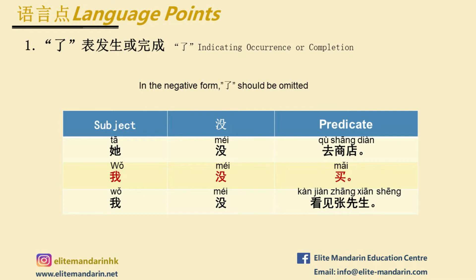The negative form of 了 in the cases above is 没 plus verb plus the object. In the negative form, 了 should be omitted. For example: 他没去商店 — she didn't go to the shop. 我没买 — I didn't buy. 我没看见张先生 — I didn't see Mr. Zhang.